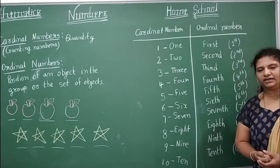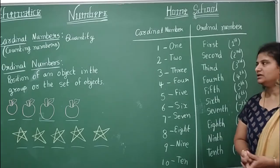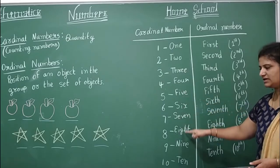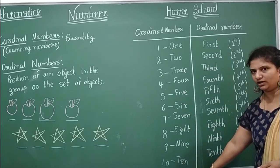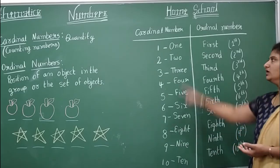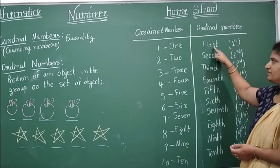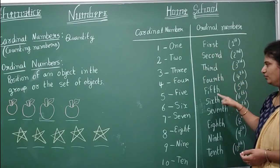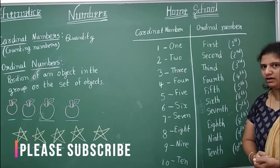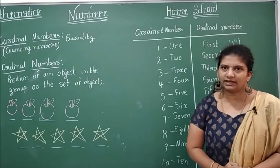Saying the quantity, we call them cardinal numbers. So 1, 2, 3, 4, 5, 6, 7, 8, 9, 10 — these are cardinal numbers, and there are many more. The positions 1st, 2nd, 3rd, 4th, 5th, 6th, 7th, 8th, 9th, 10th are ordinal numbers. This is the way we learn cardinal and ordinal numbers.